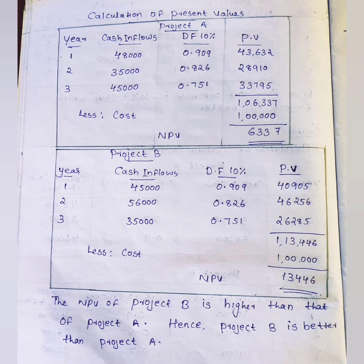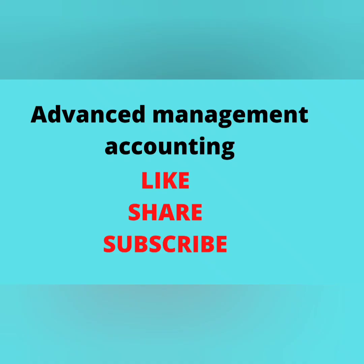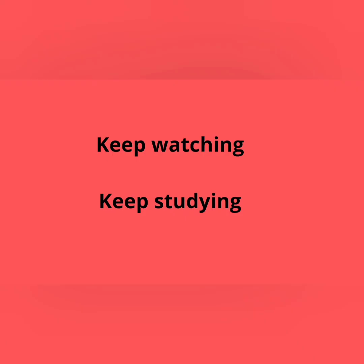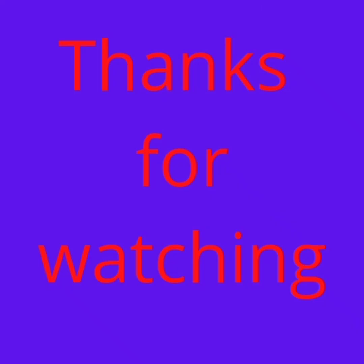Project B's net present value is Rs. 13,446. Project B has a higher NPV than Project A, so Project B is better. We select Project B using the Certainty Equivalent Method. If you have questions, please practice. If you like this video, please like, share, and subscribe to our channel. Please comment in the comment section. Thank you.